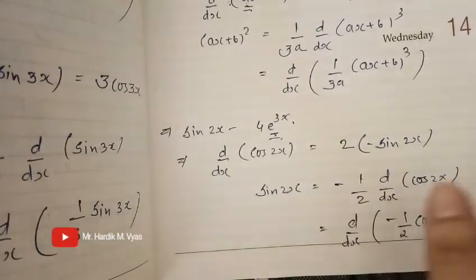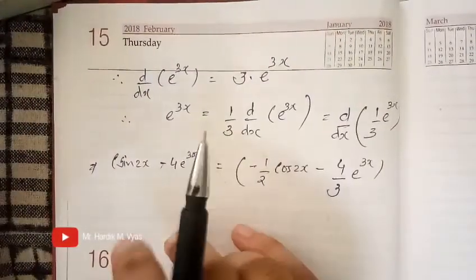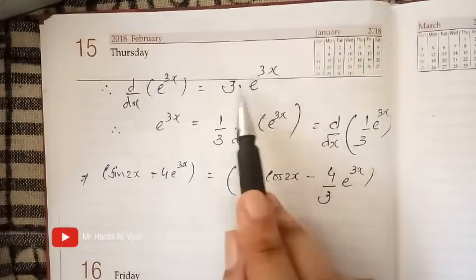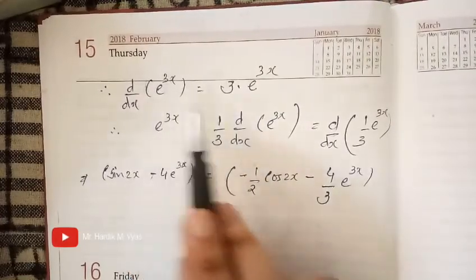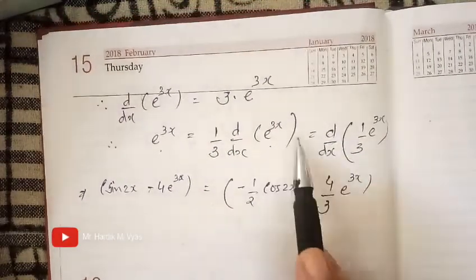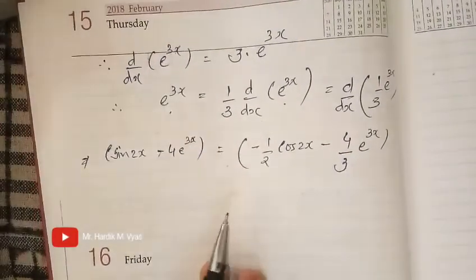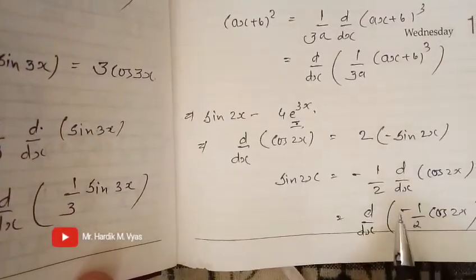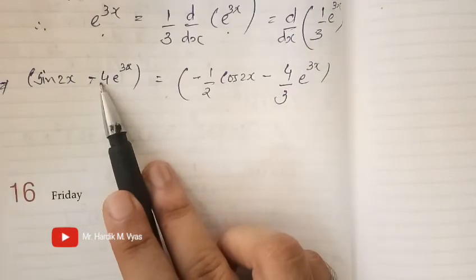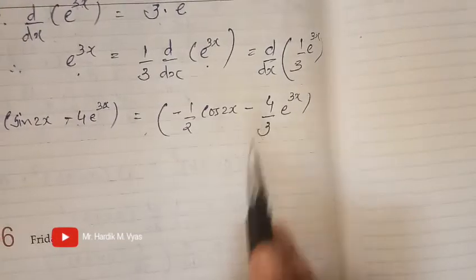Now we find the anti-derivative of e^3x. d/dx of e^3x equals 3 e^3x, so e^3x equals d/dx of (1/3 e^3x). Now substituting both results into the equation: the anti-derivative of sin 2x minus 4e^3x equals minus 1/2 cos 2x, minus 4 times 1/3 e^3x, which gives the final answer: minus 1/2 cos 2x minus 4/3 e^3x.